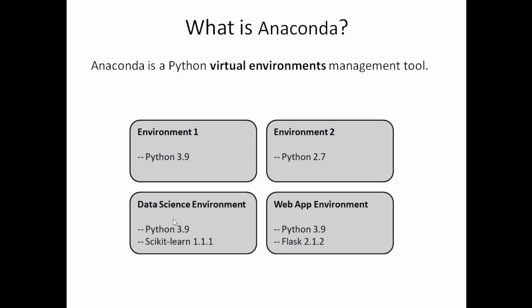For example, you can create a data science environment that is running Python 3.9 and has the data science package of scikit-learn 1.1.1. And you can create a separate environment for web applications that has the flask package of version 2.1.2. With Anaconda, you can easily create these environments and switch between them appropriately. You can also share your environment with other developers if you want them to run your application under the same environment.